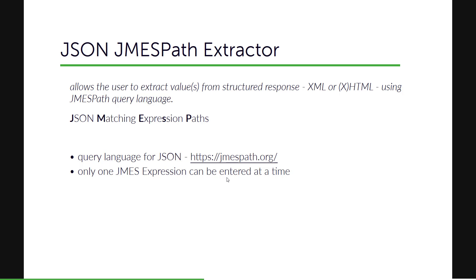If you want to learn more about syntaxes and expressions, you can go to jmespath.org. They have multiple implementations — for Python, .NET, Java, JavaScript, etc. — so you can use this in your project based on your needs. In JMeter you can write the expression directly. JMeter has a built-in tester, or you can use the JMESPath online evaluation tool. The one drawback in JMeter is you can write only one expression at a time, so if you want multiple expressions, you have to use multiple post-processors.